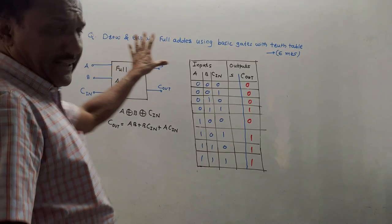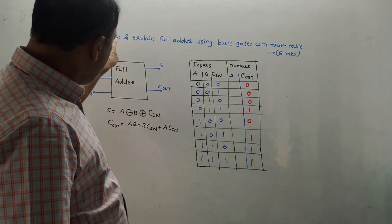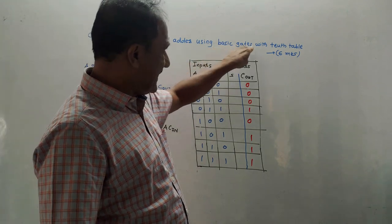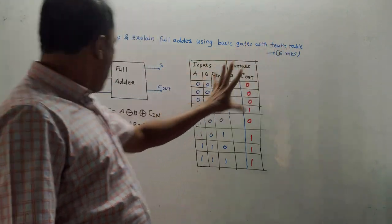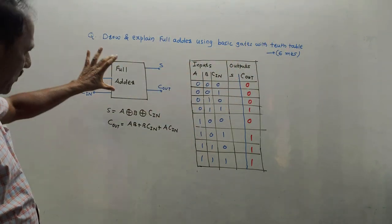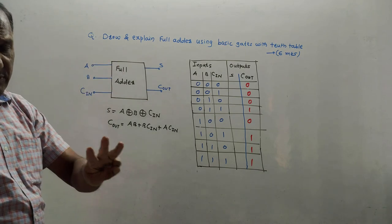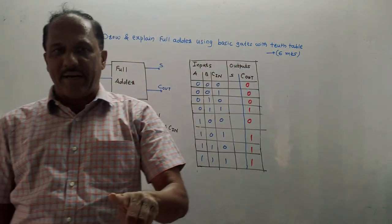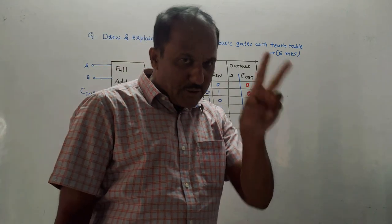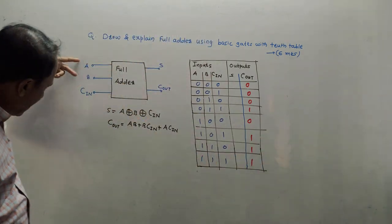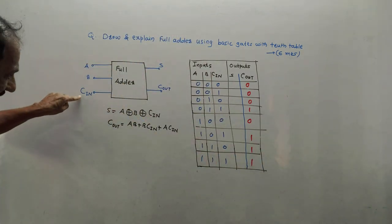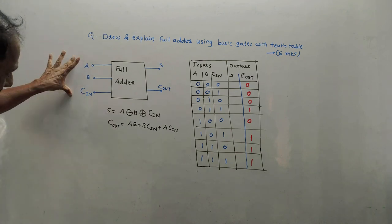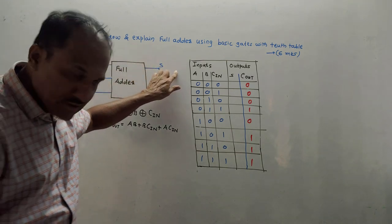Next is the full adder. The question is: draw and explain full adder using basic gates with truth table. The block diagram of full adder shows the major difference from the half adder: in the half adder we had only two inputs, but in the full adder there are three inputs — A, B, and C-in (carry input) — and two outputs: sum S and carry out.